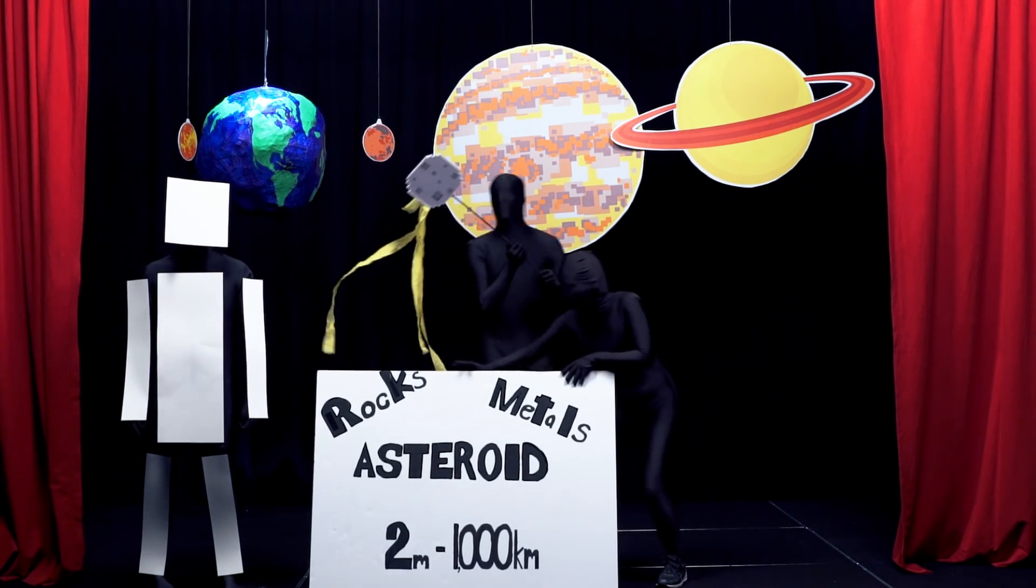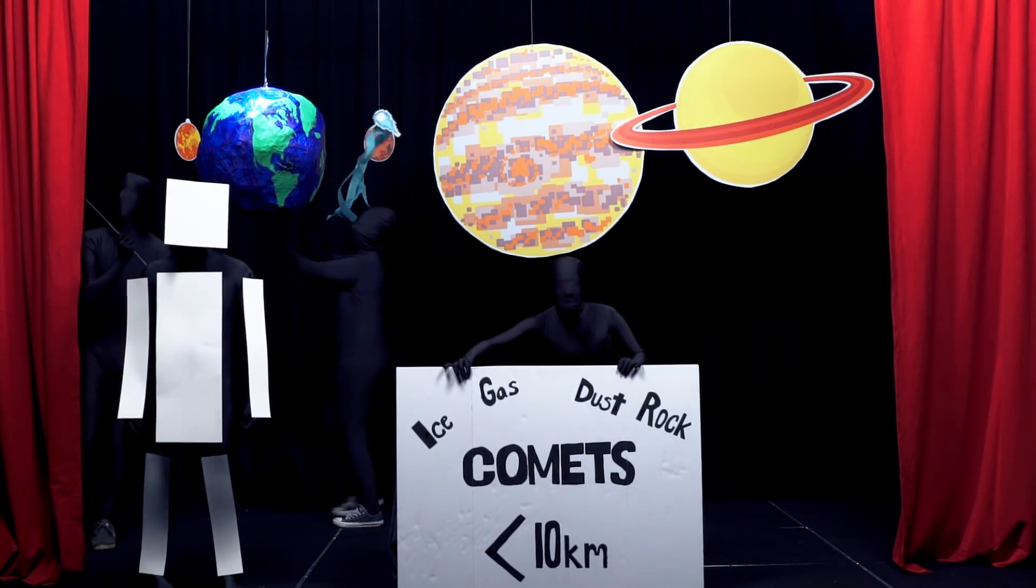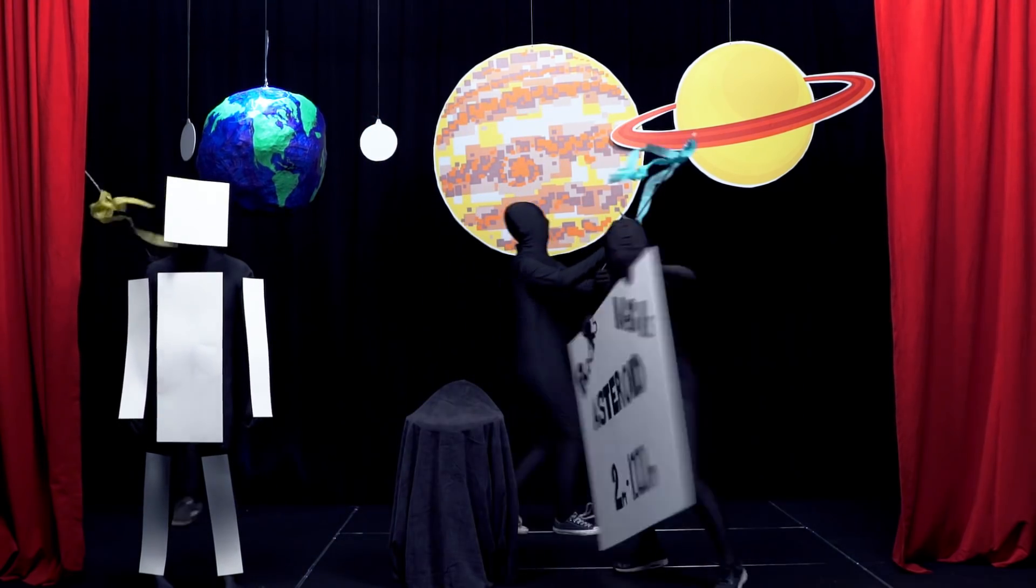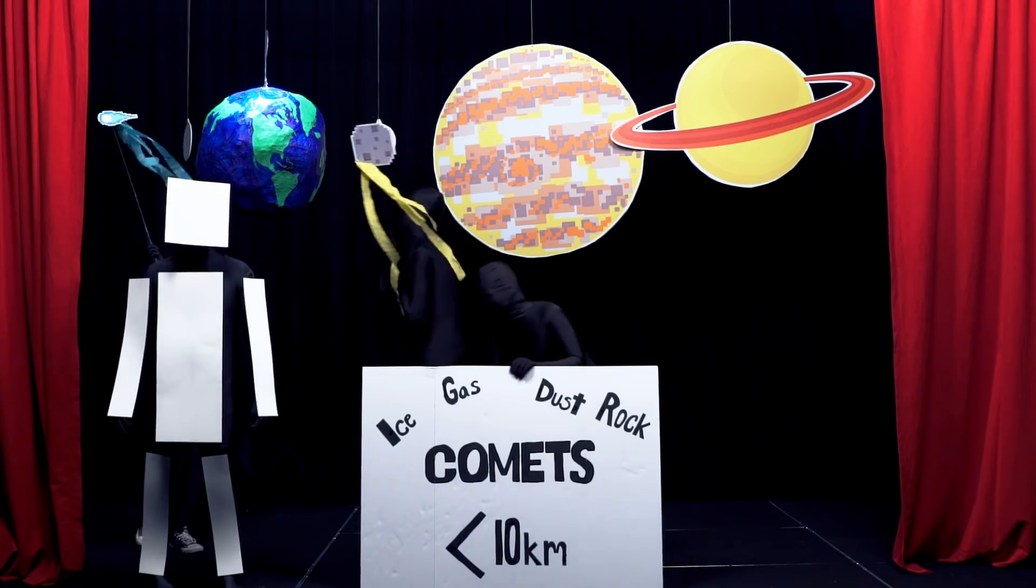Asteroids are made up of rocks and metals, while comets are more ice, gas, dust, and rock. The size of asteroids range from just 2 meters to 1,000 kilometers. Comets are typically less than 10 kilometers wide. Both objects orbit the sun, but comets are further out.